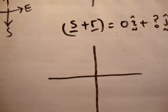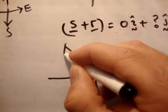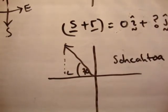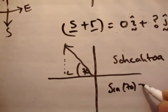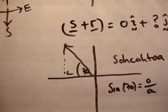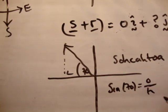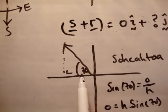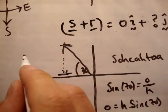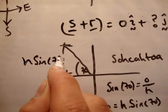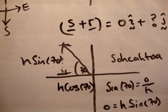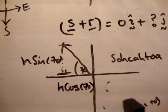Look at previous videos if you're getting confused. So 70 degrees like that. We use SOHCAHTOA, where sine 70 is equal to opposite over hypotenuse. Therefore the opposite is equal to h times sine 70 — that's the vertical component, equal to h sine 70. Similarly, this is cosine, so this would be h cos 70.